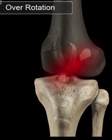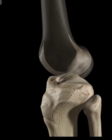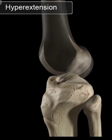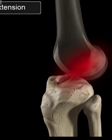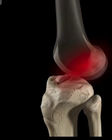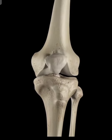This animation illustrates a complete tear of the ligament. As a crucial stabilizing ligament, a torn anterior cruciate ligament can cause severe knee instability and may also require reconstructive surgery.